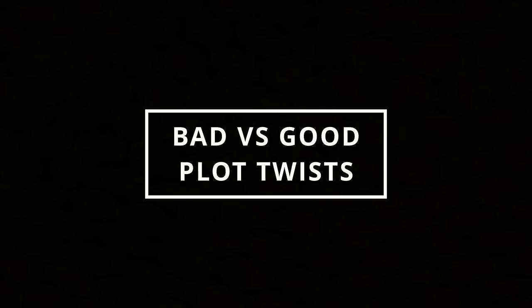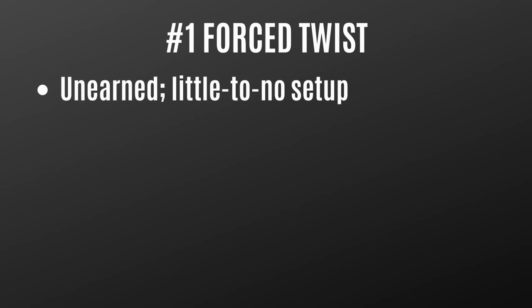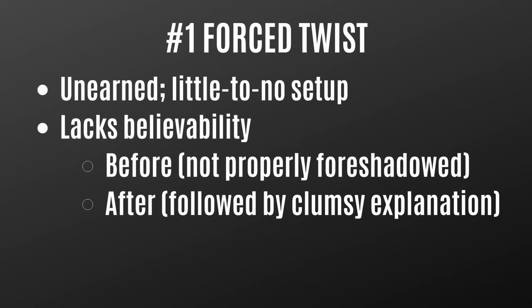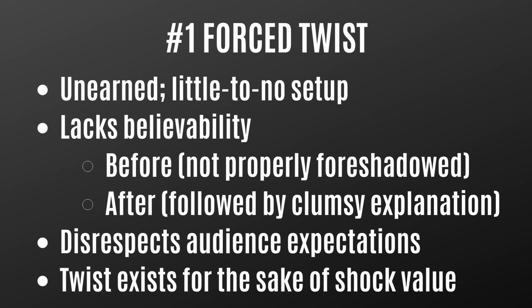Now let's look at four bad types of plot twists. The first is the forced twist — it's a twist that's unearned, with little to no setup and a lack of believability. We get a sudden surprise that isn't properly foreshadowed, usually followed by a clumsy explanation. These types of twists disrespect the audience's expectations and usually exist for the sake of shock value.